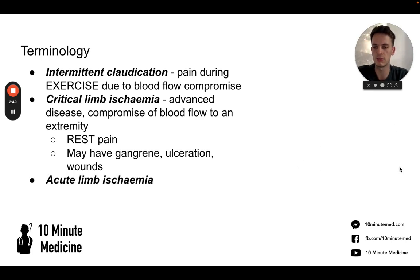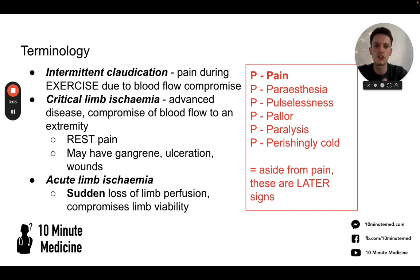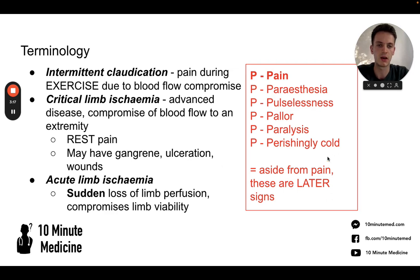Another important term, particularly for urgent care, is acute limb ischemia. This is a sudden loss of limb perfusion and it's a real emergency. It can present with the six P's: pain, paresthesia, pulselessness, pallor, paralysis, and perishingly cold. Some of these — like paresthesia and pulselessness — are late signs, but the main feature is pain at rest.